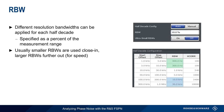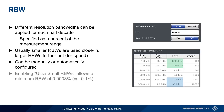Typically, smaller resolution bandwidths are used closer to the carrier, and larger resolution bandwidths are used further away. This also helps to reduce measurement time. As with most other parameters, resolution bandwidth can be configured manually or automatically. The parameter ultra-small resolution bandwidths is simply used to lower the minimum resolution bandwidth, which can be helpful when measuring very close to the carrier.